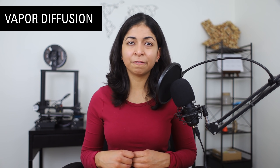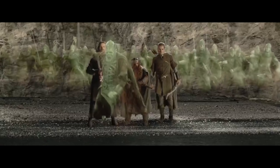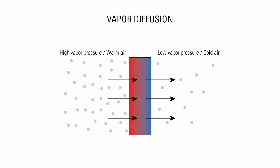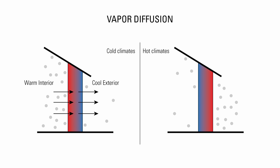You want to place a vapor barrier or a vapor retarder at a certain part of your wall before the warm air has a chance to cool down and condense. Vapor diffusion is the movement of water vapor molecules through porous materials. To achieve an equilibrium, water vapor typically moves from the side with high vapor pressure or warm air to the side with low vapor pressure or cold air. In cold climates, water vapor in the warm interior air is driven to the cooler exterior. In hot climates, water vapor in the warm exterior air is driven to the cooler interior.